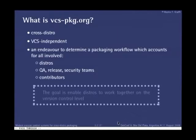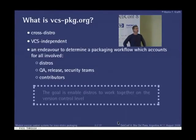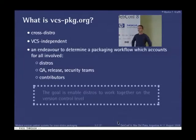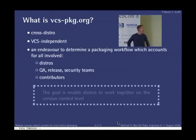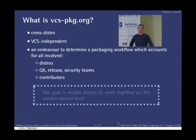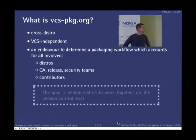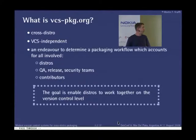So vcs-pkg.org, with these two specifications — cross-distro and VCS-independent — is an endeavor to determine a packaging workflow accounting for everyone involved in distro packaging: all the distros, all the packagers, and ideally upstream as well. Every distro will have QA, release, and security teams who should be able to easily use any workflow or infrastructure we put in place. The goal is to enable all distros to work together on a version control level.